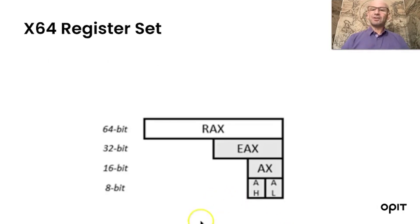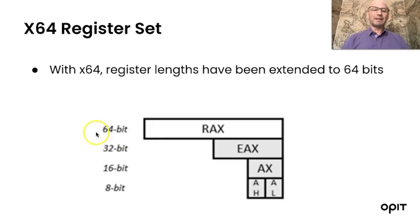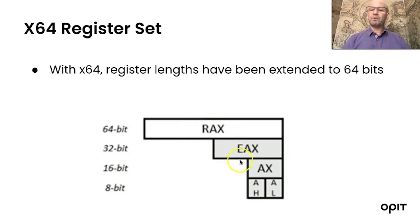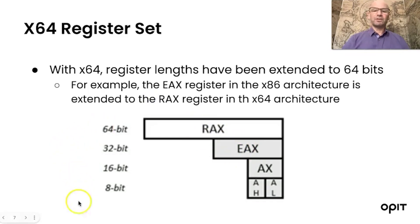Here is our register set, and you can see the 64-bit extension on top of the 32-bit. With the x64, register lengths have been extended and we use the prefix R to indicate 64-bit. Remember, with the x86 we used the extension E. So the EAX register in the x86 architecture is extended to the RAX register in the 64-bit architecture.